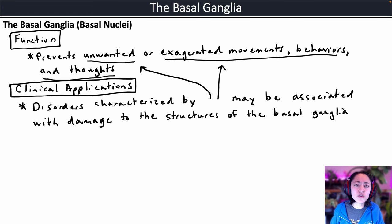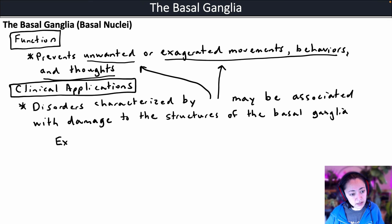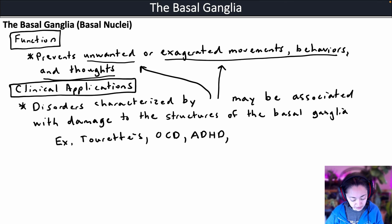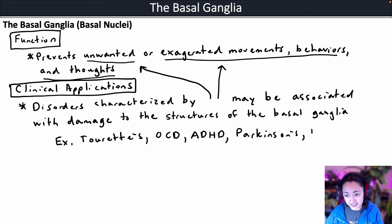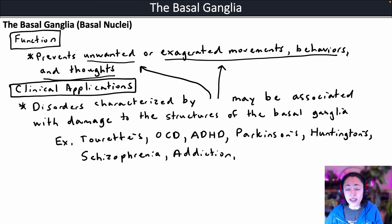Can you think of any disorders characterized by unwanted or exaggerated movements, behaviors, and thoughts? Some examples include Tourette's, obsessive compulsive disorder, attention deficit hyperactivity disorder or ADHD, Parkinson's disease, Huntington's disease, schizophrenia, addiction, and autism.